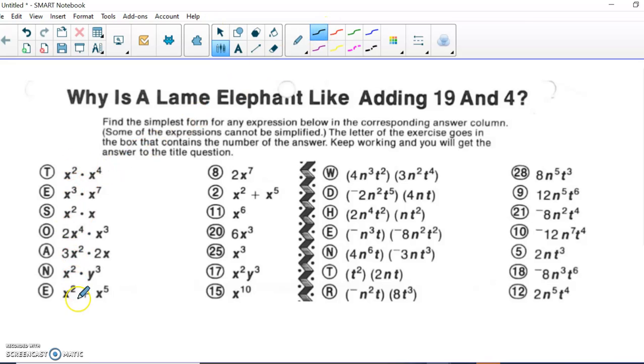And what you want to do is simplify the expression on the left and match it with the simplified version on the right. So the first one you're going to see is when you're multiplying exponents. And remember when you multiply exponents, you add the exponents when they have the common base.